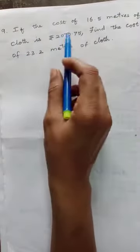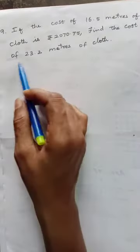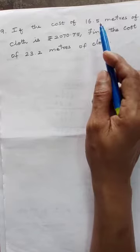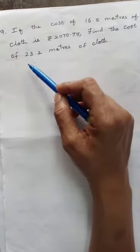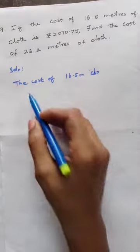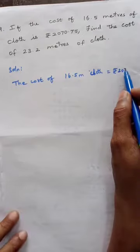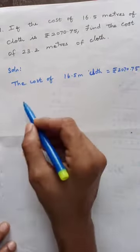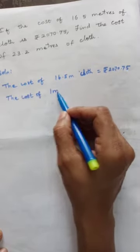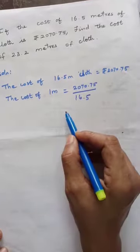Problem 9: The cost of 16.5 meters of cloth is rupees 2070.75. Find the cost of 23.2 meters of cloth. First, divide to find the cost of 1 meter, then multiply that by 23.2. Solution: cost of 16.5 meters = rupees 2070.75. Cost of 1 meter = 2070.75 ÷ 16.5.